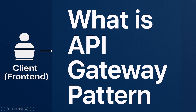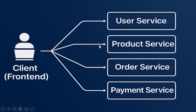What exactly is the API gateway pattern and why is it so important in modern application architecture? Imagine you are building an e-commerce platform. You've got separate services for users, products, orders, and payments, each handling its own job. Your front end — maybe a website or a mobile app — needs to talk to all of them to make the app work, getting product data, authenticating users, placing orders, and processing payments.